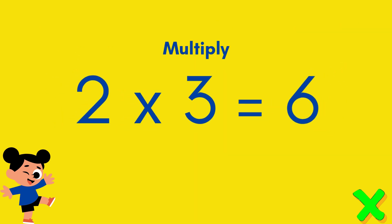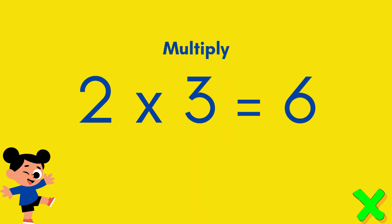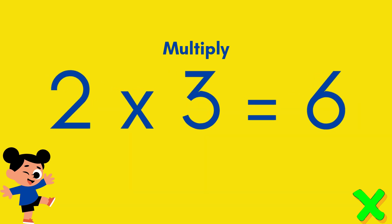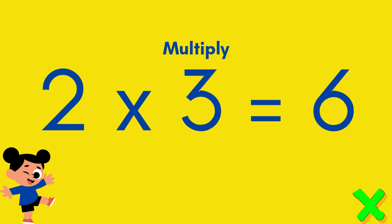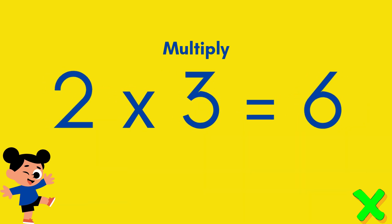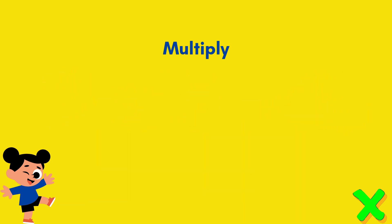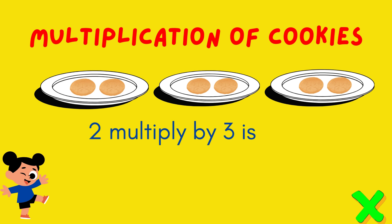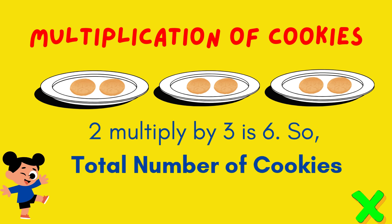Two times three equals six. Two multiplied by three is six, so the total number of cookies is six.